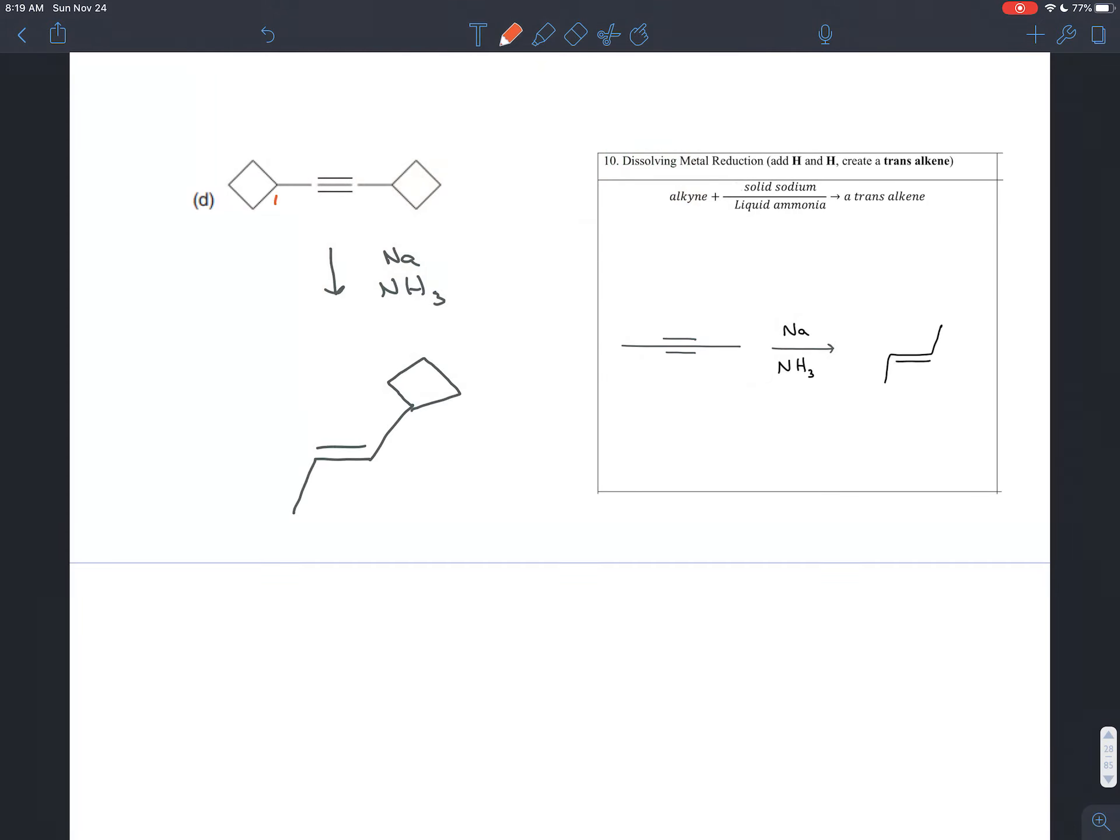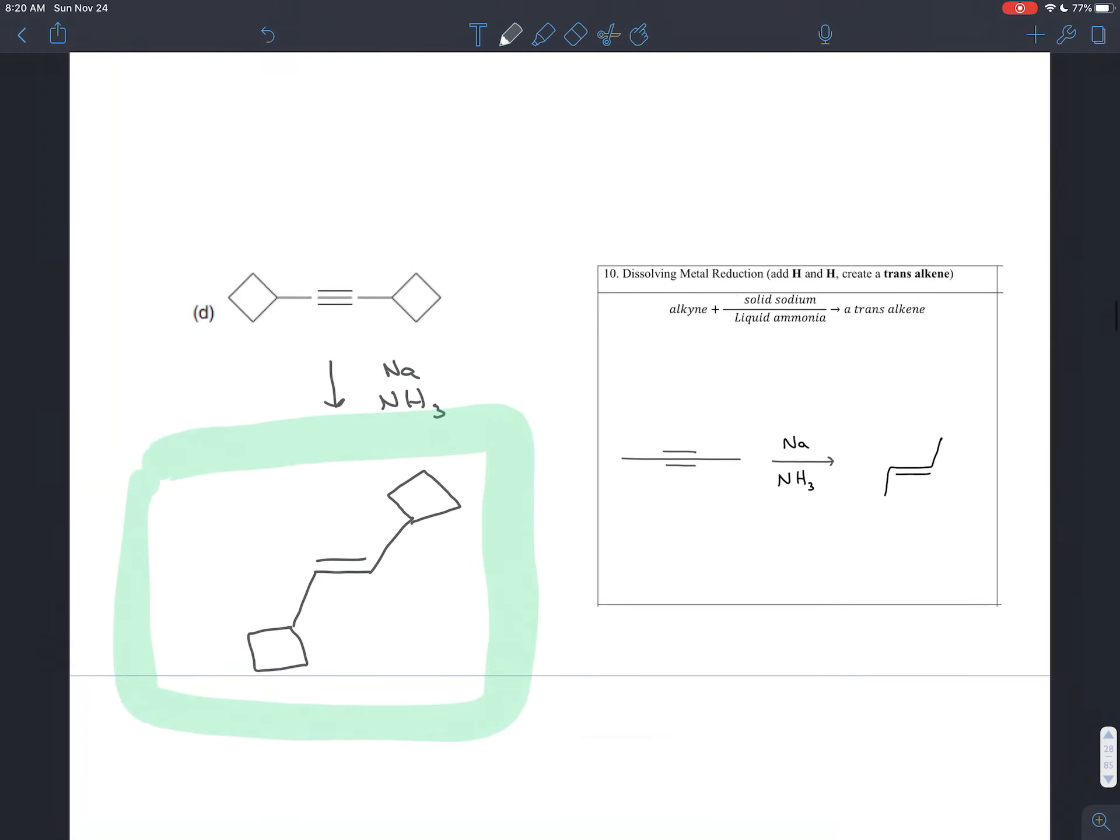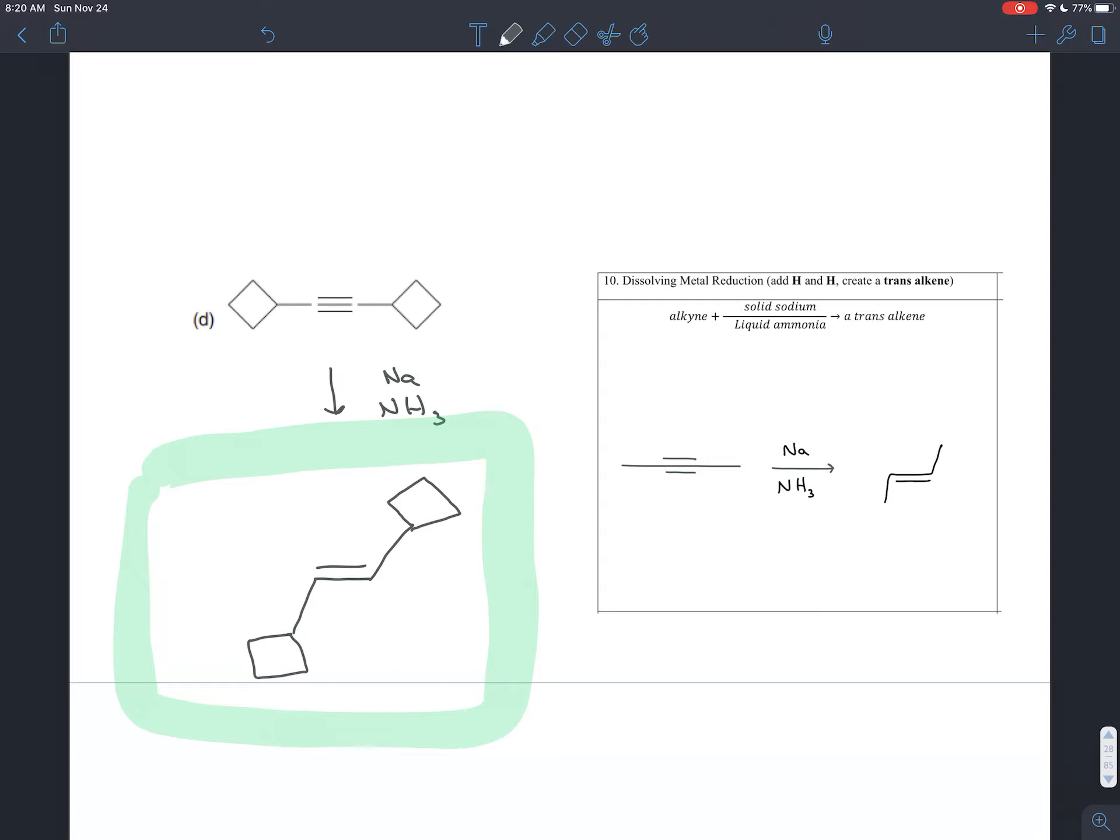And so that's your answer. You would end up getting this trans alkene when you treat this alkyne with sodium and liquid ammonia. And that is some practice with doing dissolving metal reduction.